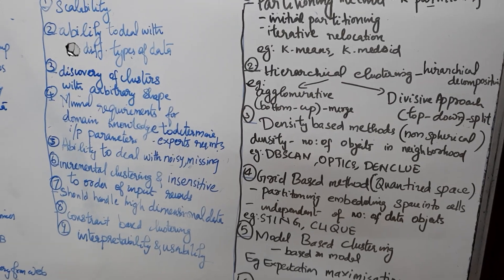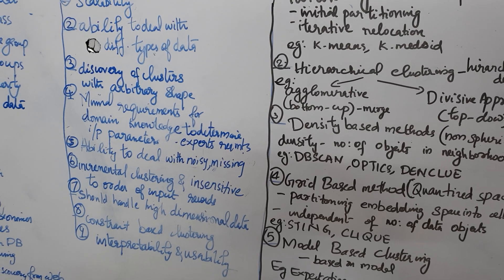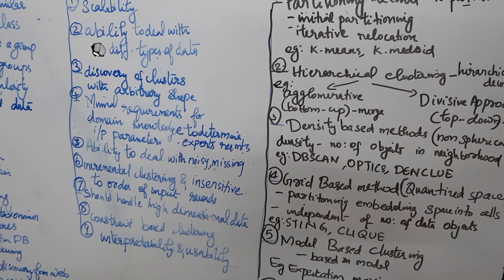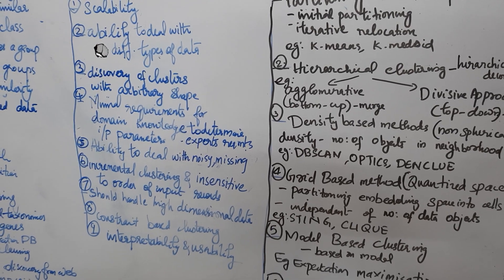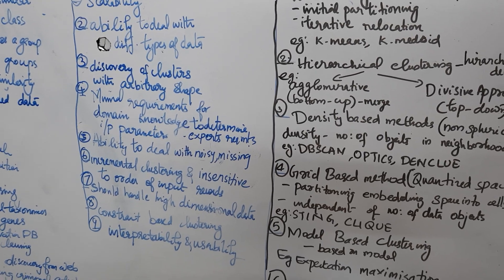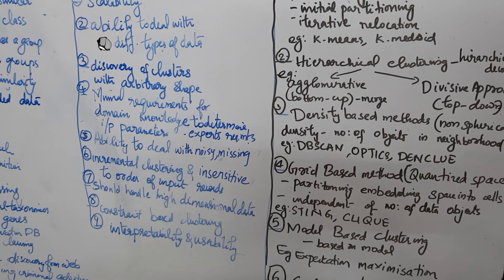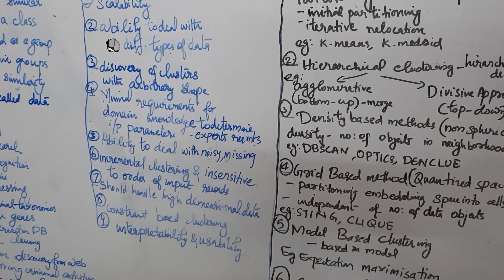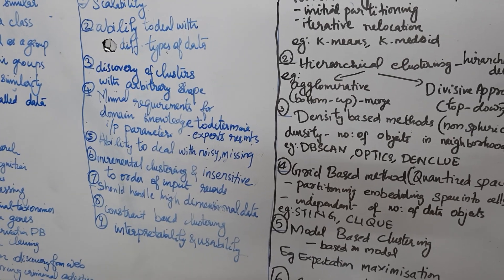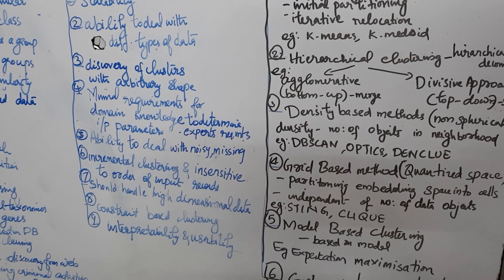Another requirement is incremental clustering and insensitivity to the order of input records — the algorithm must adapt to newly inserted data, so that depending on the presentation of input, existing clusters should be adapted. High dimensionality is a requirement as human eyes can easily handle two to three dimensional data, but it is challenging to determine high-dimensional space data, so it should be done by clustering. Constraint-based clustering: the challenge lies in finding groups of data with good clustering behavior so that they satisfy specified constraints.